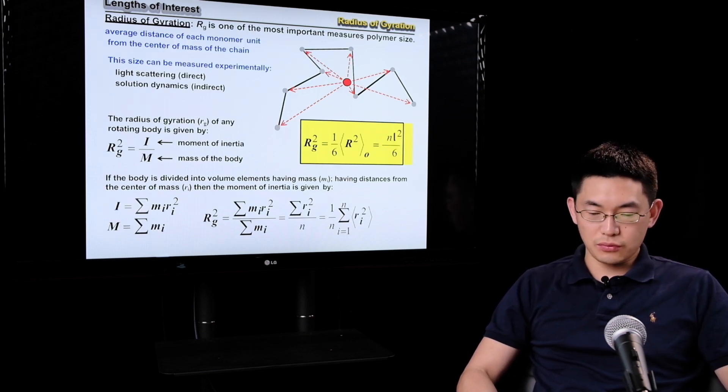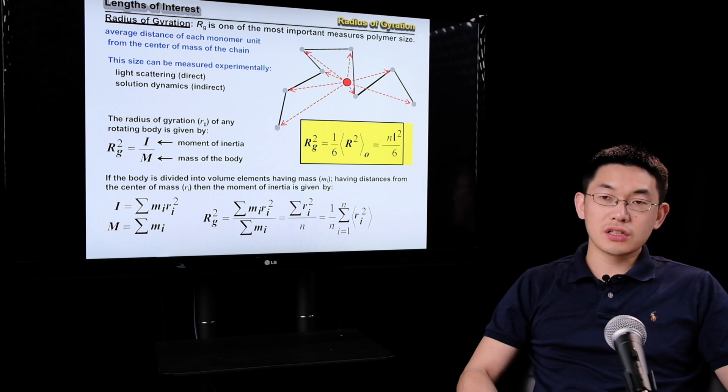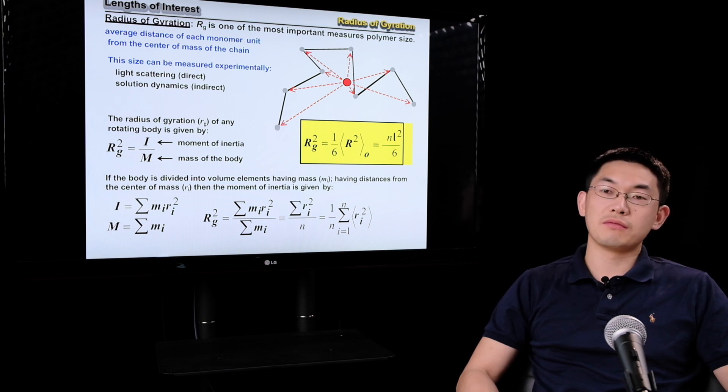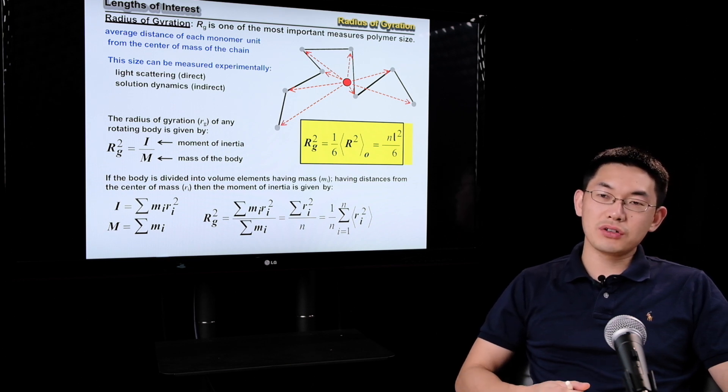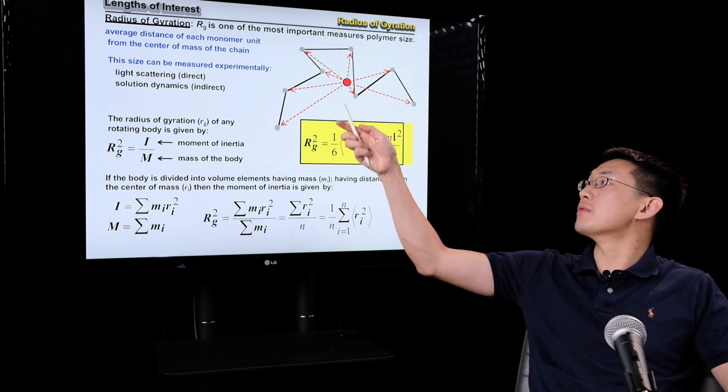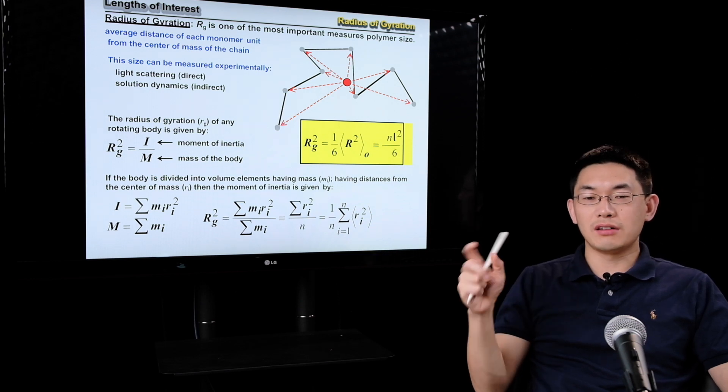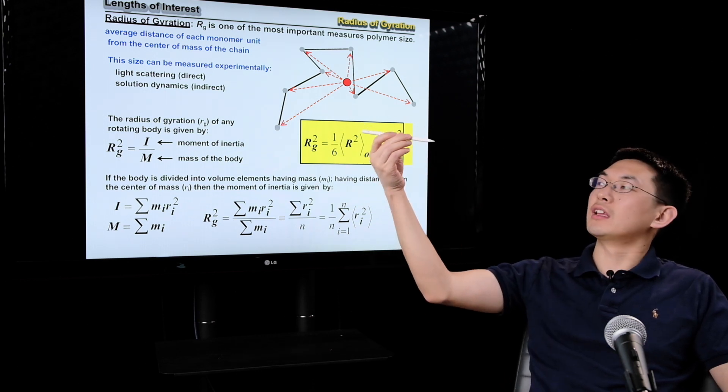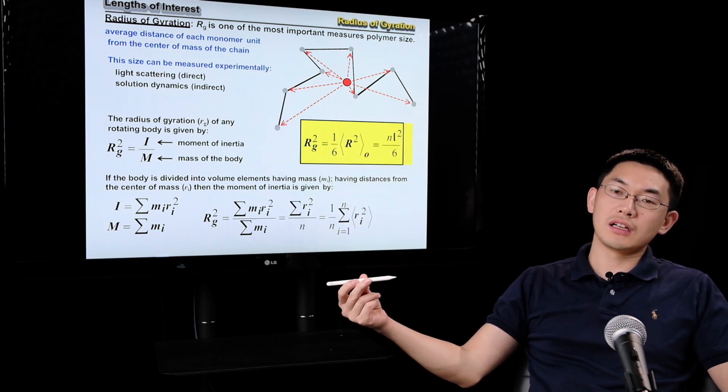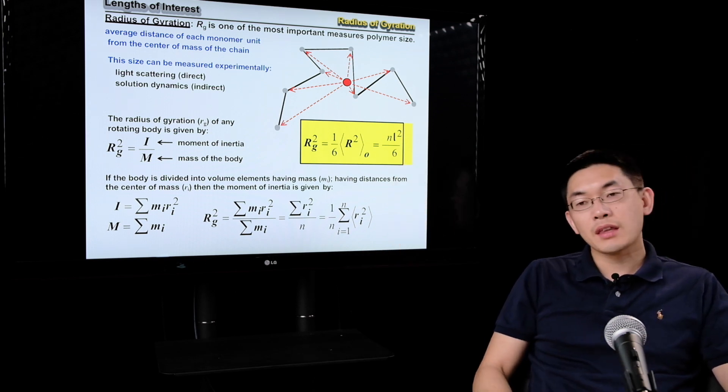This slide shows you what is the first definition of radius of gyration. It's basically the average distance of each monomer unit from the center mass of the chain. So let's first define what the center of mass. If you calculate out from each point and take a weight average and find its center, it's called weight center. It's represented by this red dot. So if you think about Earth, that will be where the core of the Earth, or think about my pen, center of the weight will be roughly in the middle of the pen.